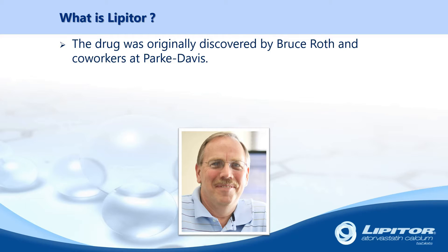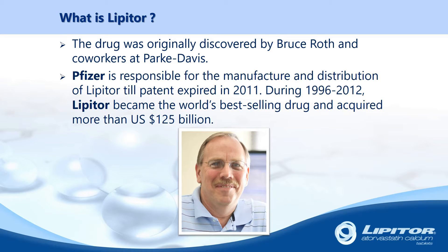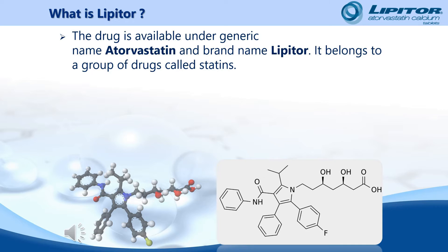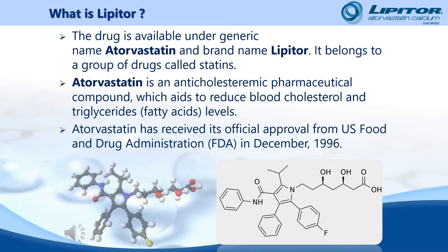Lipitor, which also goes by the generic name Atorvastatin, was discovered in August of 1985 by the Parke-Davis Pharmaceutical Research Facility in Ann Arbor, Michigan, led by Bruce Roth. Roth and his co-workers were researching atherosclerosis, or the thickening of artery walls. Between its release in 1996 and 2012, Lipitor became the best-selling drug of all time, making over $125 billion US dollars. The patent on Lipitor expired in 2011 and is now sold as a generic called Atorvastatin. Atorvastatin belongs to a group of drugs called HMG-CoA reductase inhibitors, also known as statins.